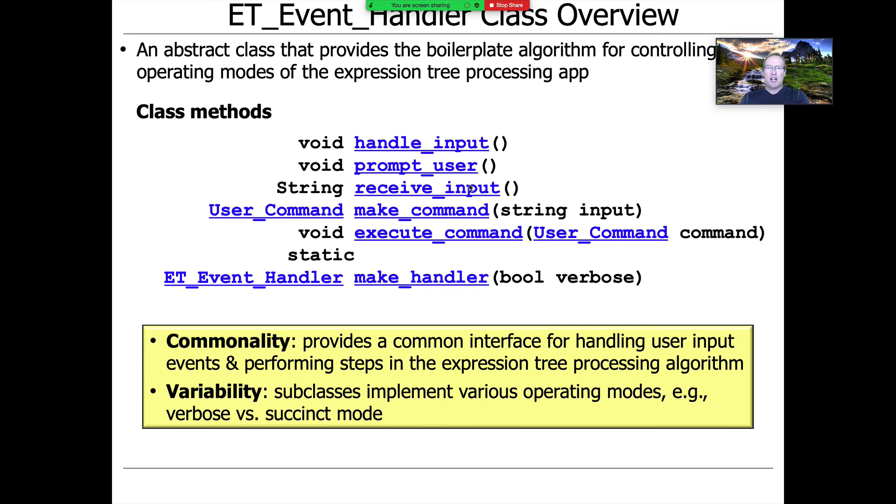From a commonality and variability perspective, it should be pretty clear why these things work so nicely. We have this common interface that's going to factor out the steps in the template method. Everything is always fixed. We have a fixed algorithm. We could actually make handle input be a non-virtual method if we wanted to. We make it virtual just to be on the safe side if we need to change the steps. But if we never change the steps, handle input could be non-virtual. And we would get variability by subclassing the ET event handler class to be succinct or verbose.